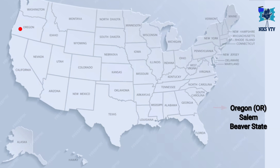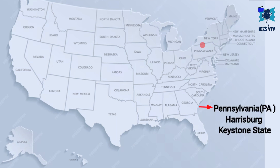Next state is Oregon, OR is its abbreviation, its capital is Salem, and its time zone is PST, and its nickname is Beaver State. Next state is Pennsylvania, its abbreviation is PA, its capital is Harrisburg, its time zone is EST, and its nickname is Keystone State.